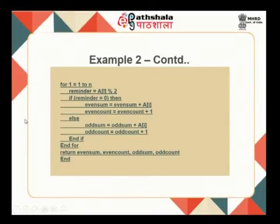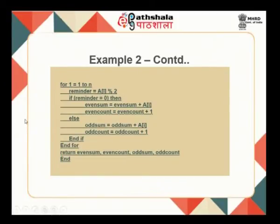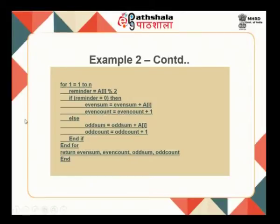We start a loop for i = 1 to n, read each number, and take the remainder. If the remainder is 0 it is even, so we add it to the even sum and increment even count by 1. When all n numbers are processed, all values — even sum, even count, odd sum, and odd count — are computed. We return all these values as the output of the algorithm.